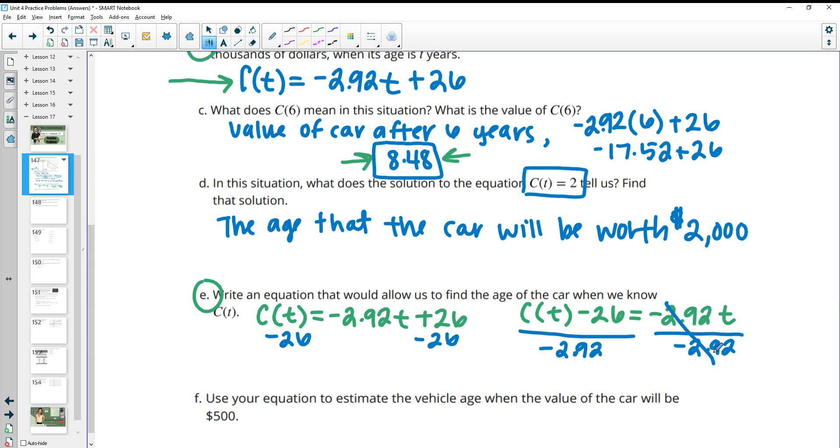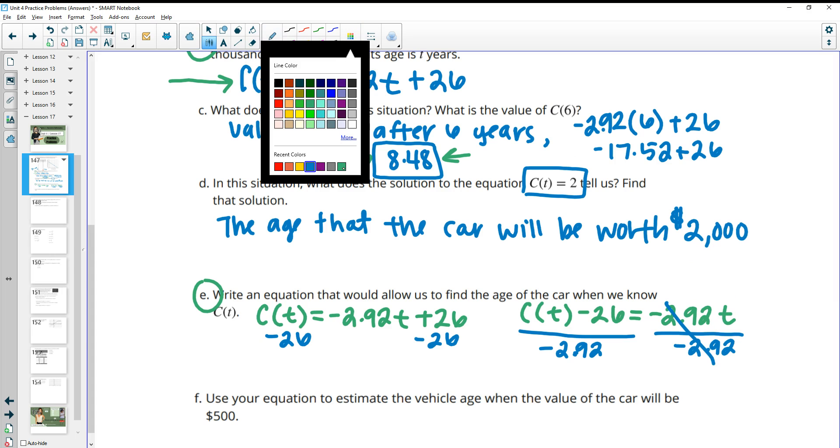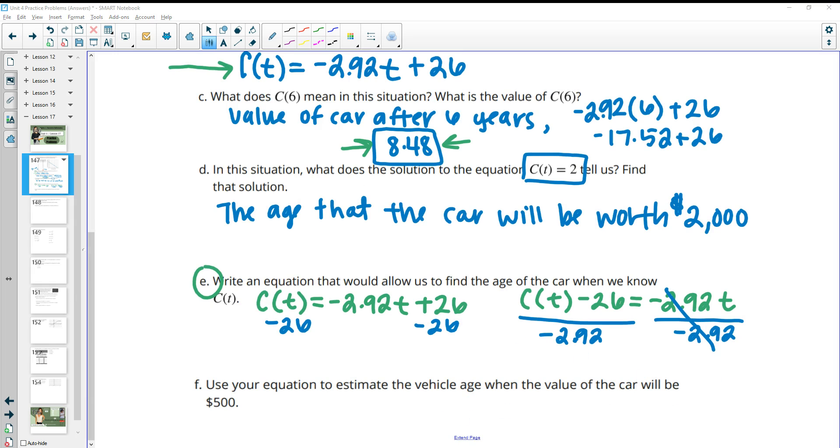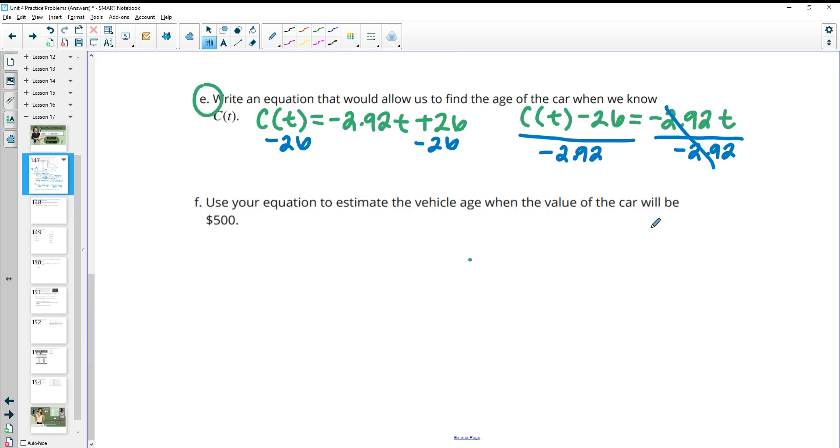So then we get C(t) minus 26 equals negative 2.92 times t. So then we would divide by the negative 2.92 to get t by itself. So then this would just be t because negative 2.92 divided by negative 2.92 is just 1. So then our equation is just going to be t equals C(t) minus 26 all divided by negative 2.92. So then that's the equation for that problem.